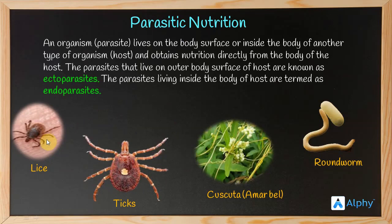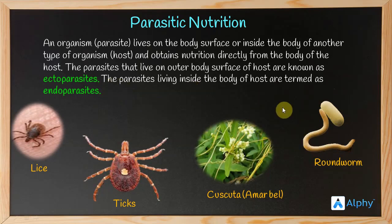Lice are present on the scalp, ticks are present on the hair or skin, and cuscuta wraps around the surface of other plants. Since these three are present outside the body of the host and derive nutrition from them, they are ectoparasites. However, roundworm is an endoparasite because it lives inside the gut of the host.